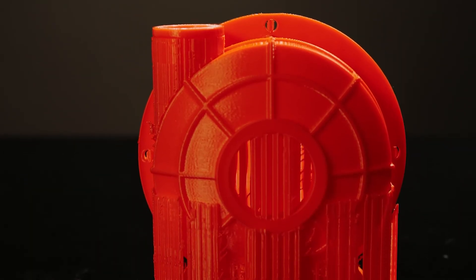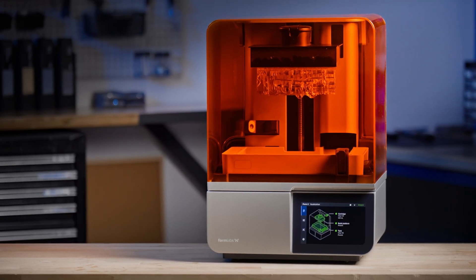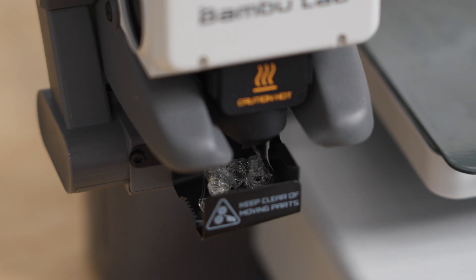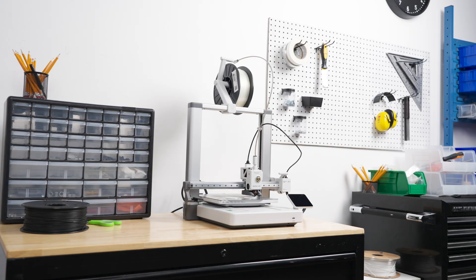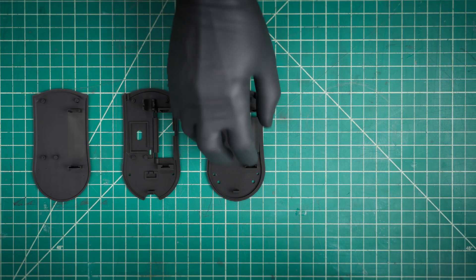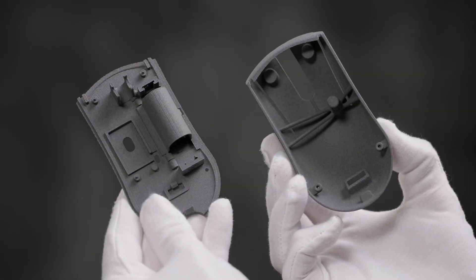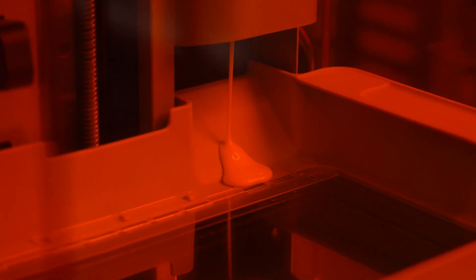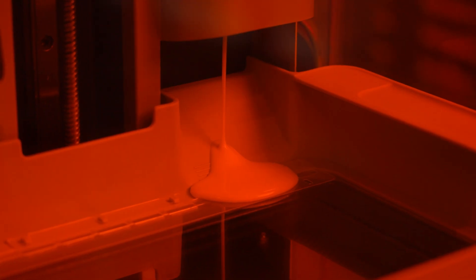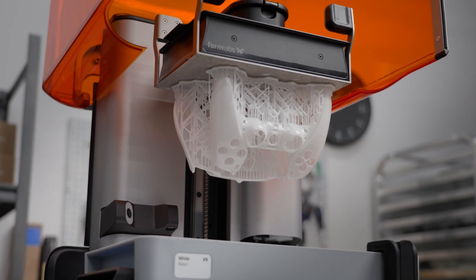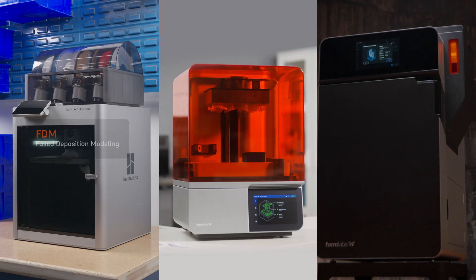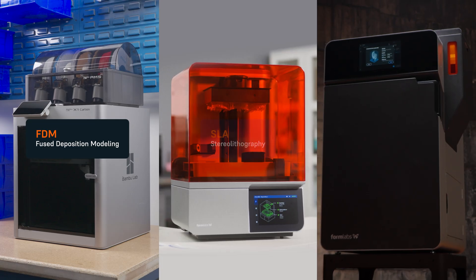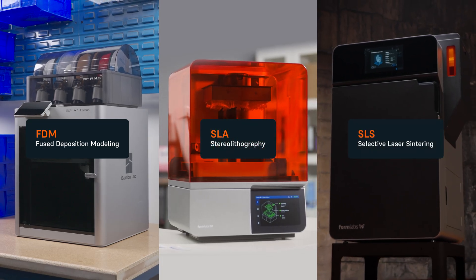But when comparing the cost of different 3D printers and accurately calculating the cost per part, there's more to consider than just sticker prices. Materials and labor costs are important to factor in when evaluating cost per part. In this video, we'll compare costs for the three most common 3D printing technologies for plastics – FDM, SLA, and SLS.